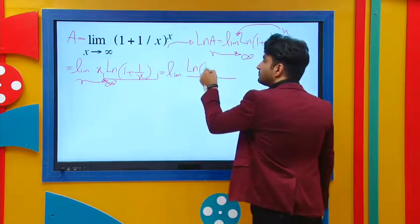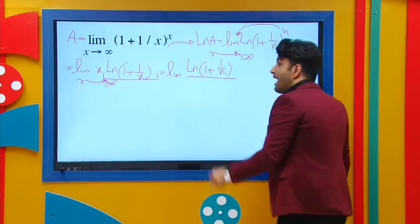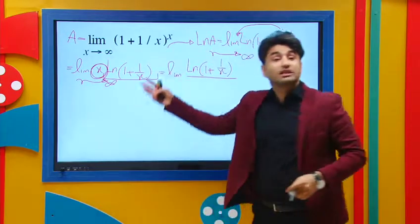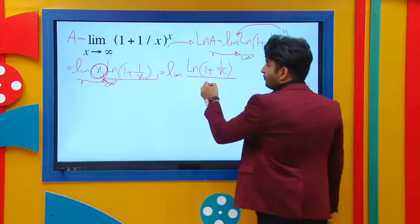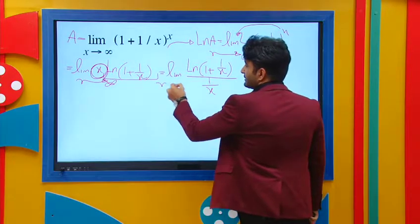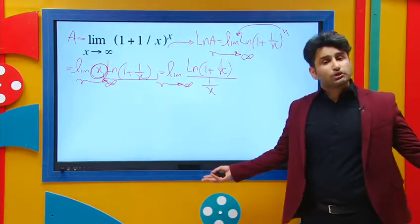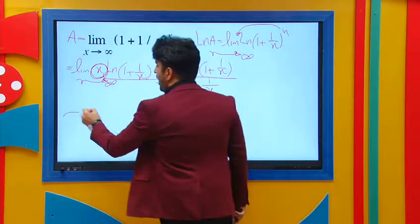So on top I'm going to write ln(1 + 1/x) and take the term without ln to the denominator which gives me 1/x as x approaches infinity. Now apply L'Hôpital's rule, so take derivative of top and bottom of the fraction.